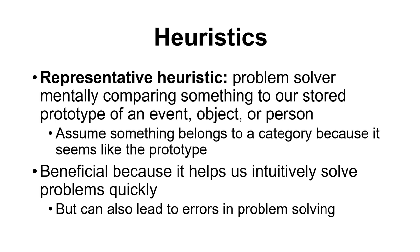The textbook illustrates this by describing individuals based on personality traits and asking what job each might have. If someone is described as shrewd, a good businessman, and a fast talker, you might quickly assume they're a salesperson. If someone works with their hands, is hardworking and trustworthy, you might assume they're a laborer. That assumption can be helpful if accurate, but we're essentially working with two-dimensional prototypes — which are basically stereotypes.